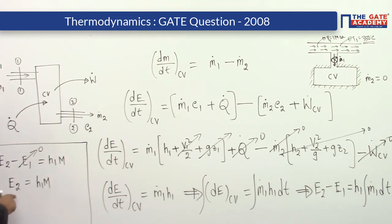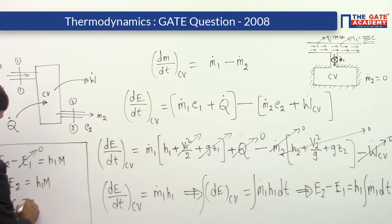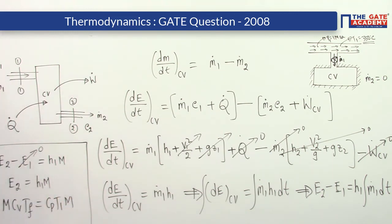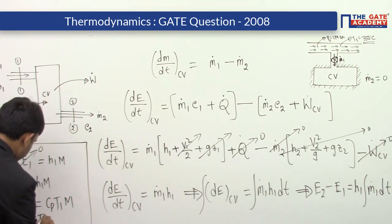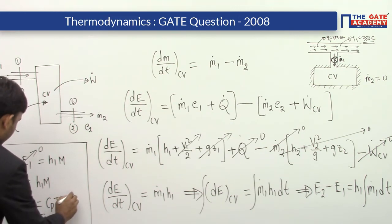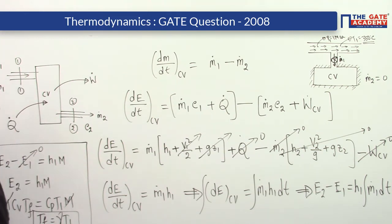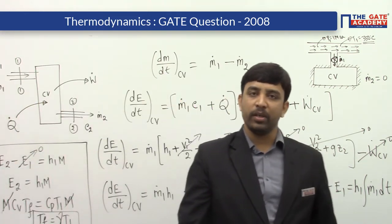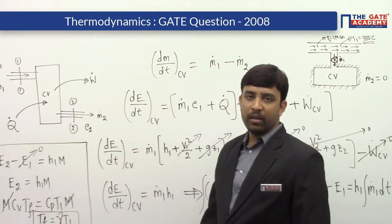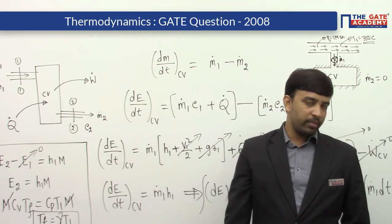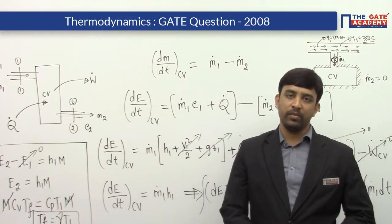The final energy of the control volume — that is, the internal energy — can be written as m times cv times T_final. And h1 equals cp times T1 times m. So: m × cv × T_final = m × cp × T1, which gives T_final = (cp/cv) × T1 = γ × T1. For air, γ is 1.4, so T_final = 1.4 × T1. This means the final temperature is 40 percent more than the inlet temperature of 350°C — so it is obviously greater than 350°C.